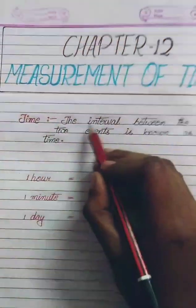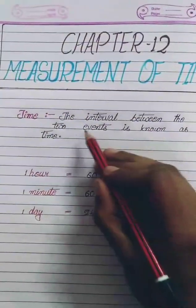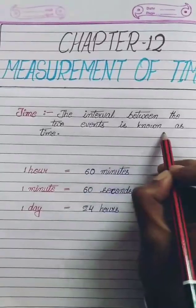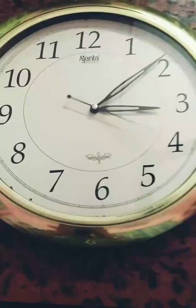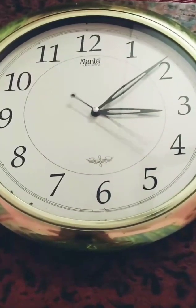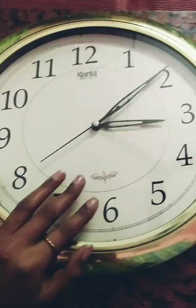The interval between two events is known as time. Now let's understand something about the clock.